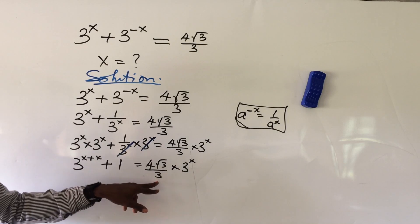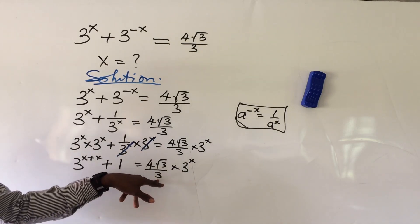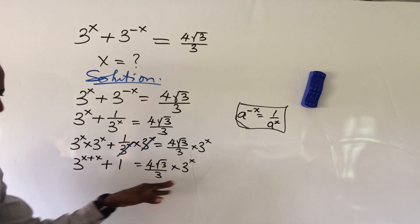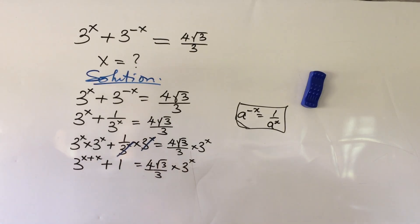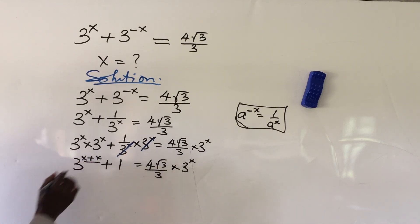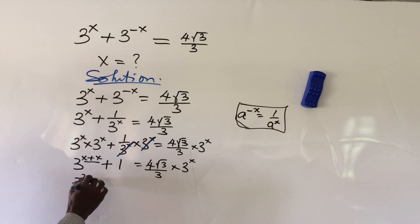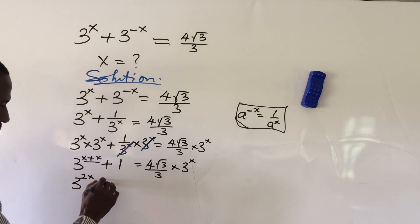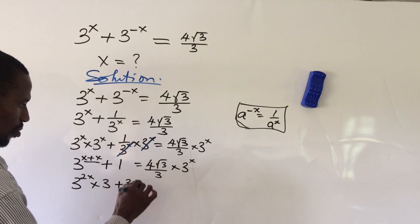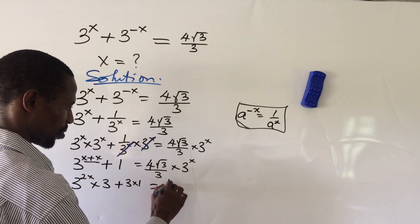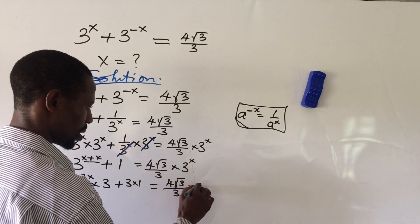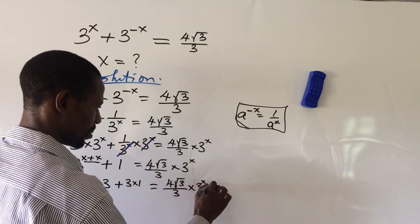Again, let's eliminate this denominator — this 3 we have here. So for us to eliminate this, we multiply through by 3. This gives us: 3 to the power of 2x times 3 plus 3 times 1, equal to 4 root 3 all over 3 times 3 to the power of x times 3.